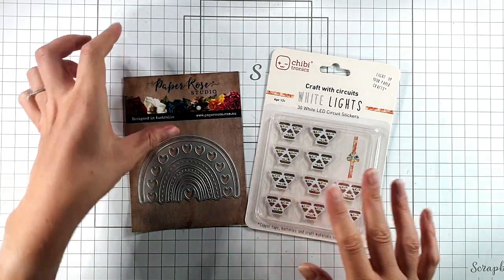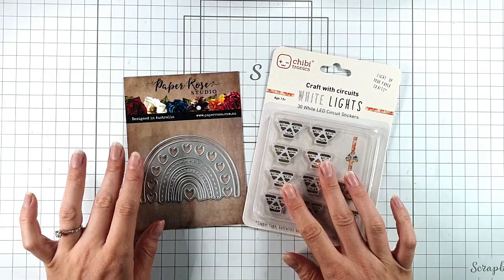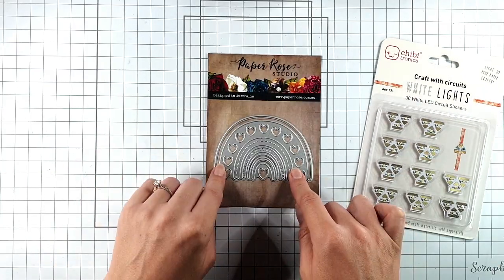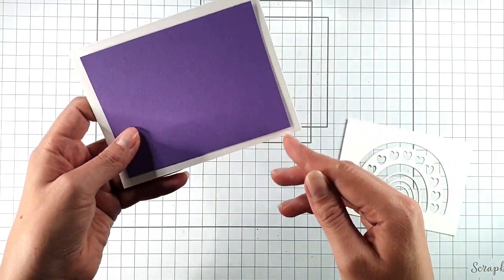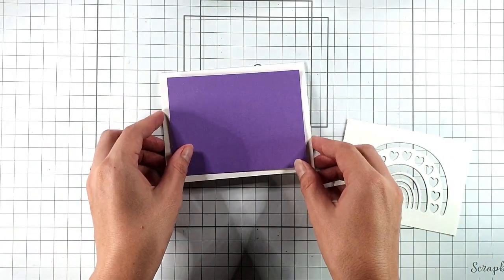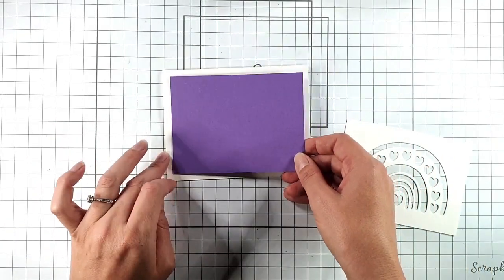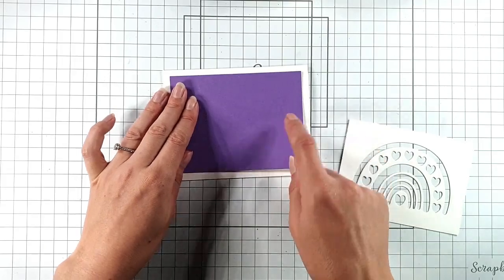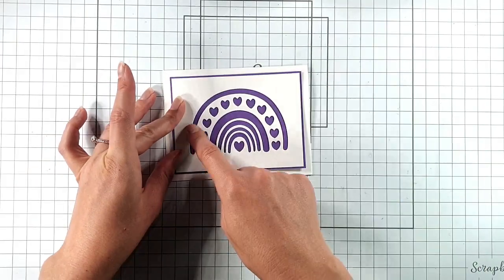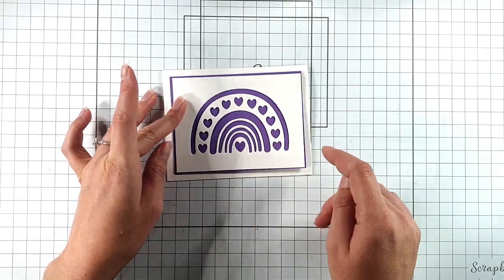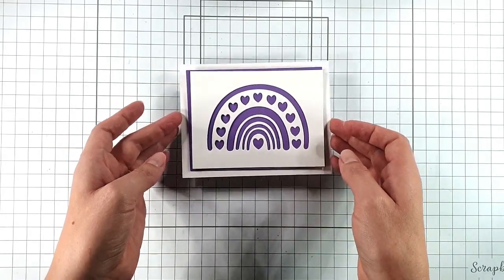We're going to be using the Chibitronics white lights and the Paper Rose Studio wonky heart die. I'm making a four and a quarter by five and a half inch card, then I've got a five inch by three and three quarter inch piece of purple cardstock, and then this white piece is an eighth of an inch smaller and you can see I've cut the rainbow out of that.